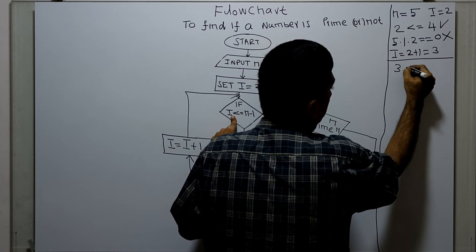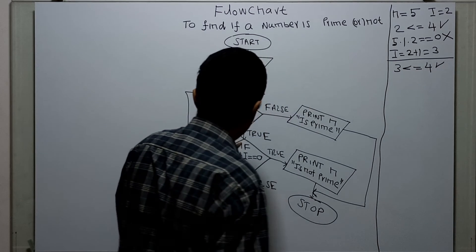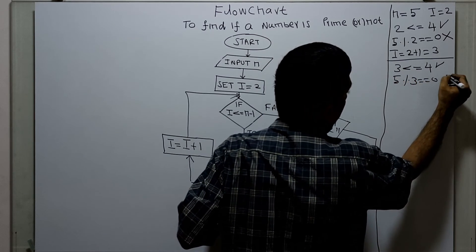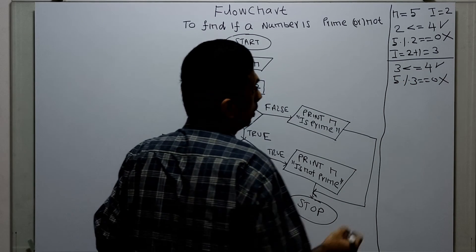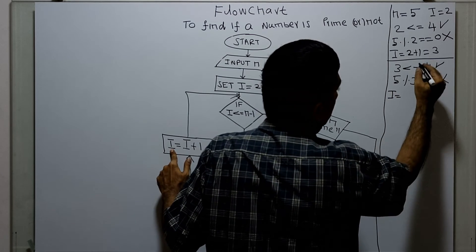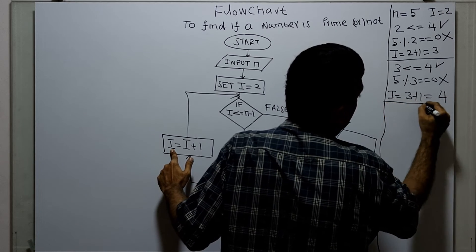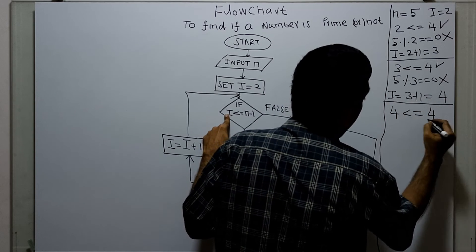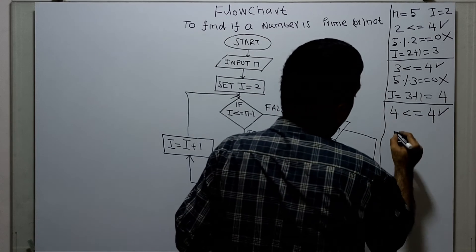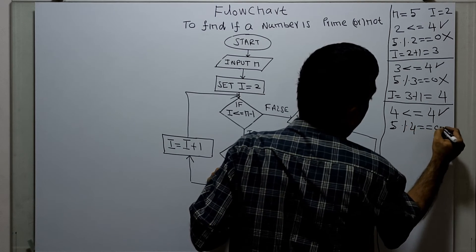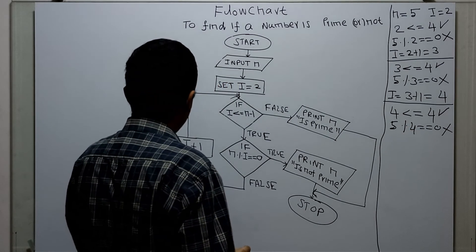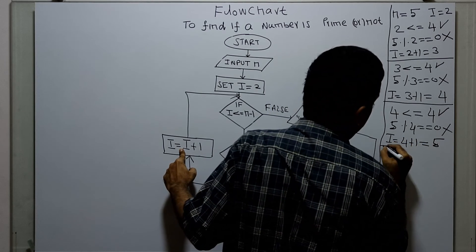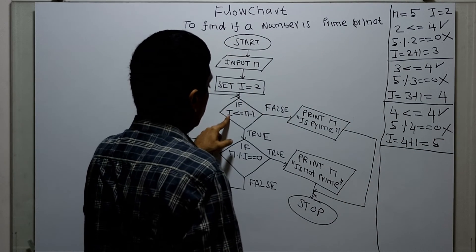Second iteration: i value three less than or equal to n minus one, which is four — condition is true. Checking n modulo i equal to zero: five modulo three, remainder is two — this is false. Incrementing i by one: i equal to three plus one, which is four. Next iteration: i four less than or equal to four — condition is true. Checking five modulo four equal to zero — this is false, remainder is one. Incrementing i by one: i becomes four plus one, which is five.